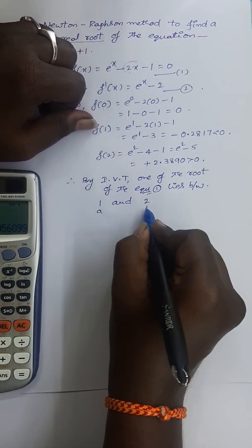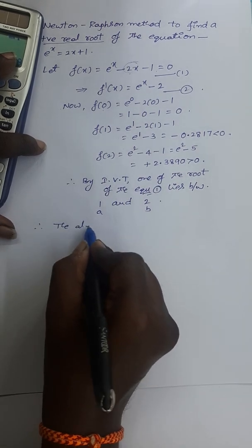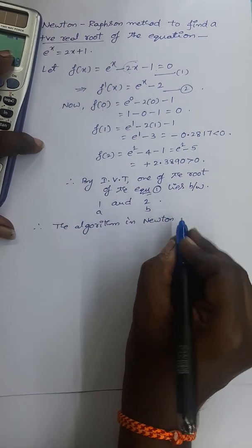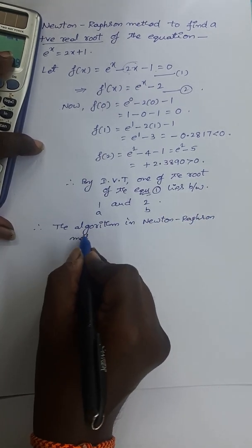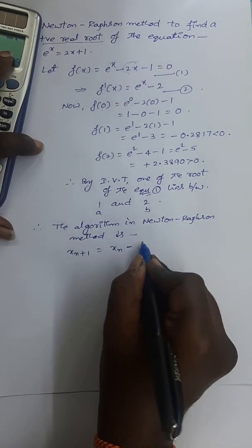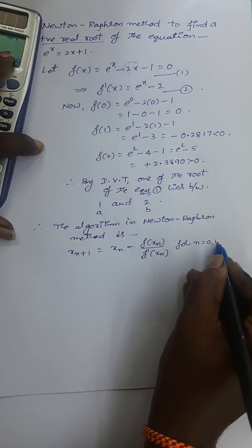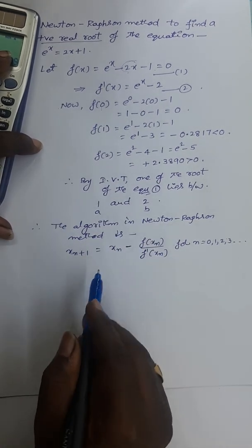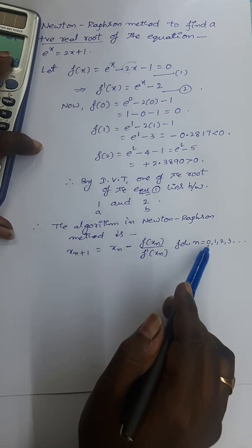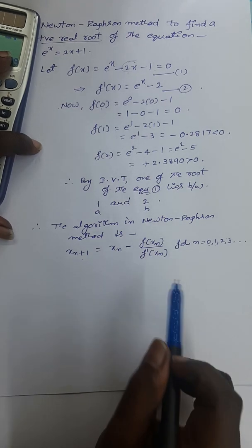The algorithm in the Newton-Raphson method is: x_{n+1} = x_n - f(x_n) / f'(x_n), for n = 0, 1, 2, 3, and so on. By putting n = 0 you get the first approximation, by putting n = 1 you get the second approximation, and so on. We continue the process until two successive approximations are equal.